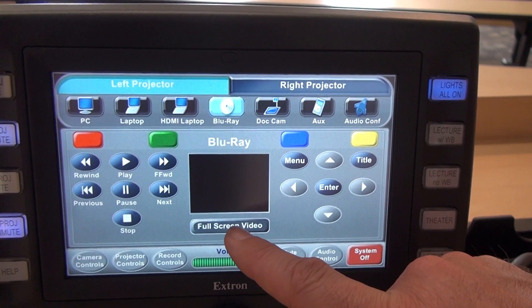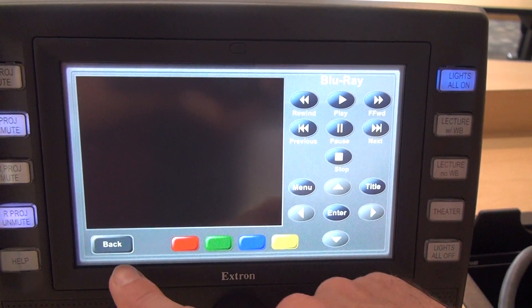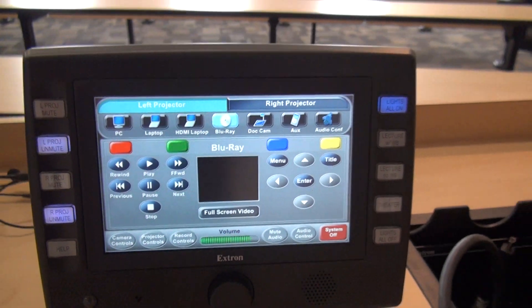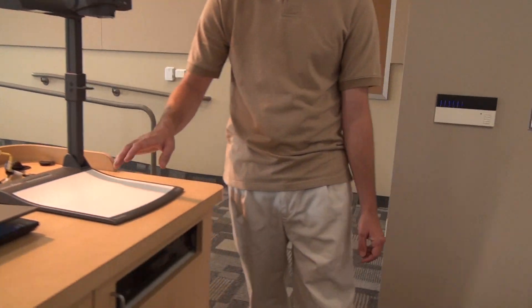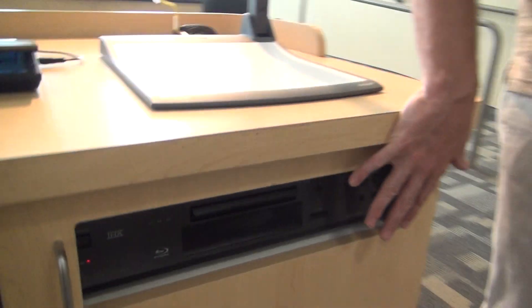There's a full screen video button and when I press that I can preview what I'm doing on the blu-ray and then I can hit back to get back to my main screen. The blu-ray is located down underneath the document camera on the right-hand side here. You can use the front panel controls if you need to as well, and you can play regular DVDs and CDs in there. You don't have to have a blu-ray disc to use the blu-ray player.